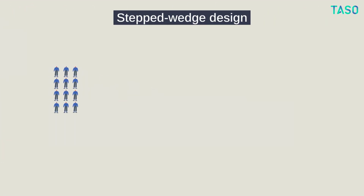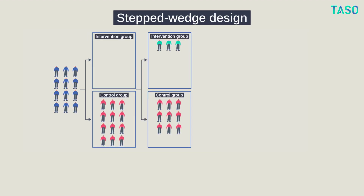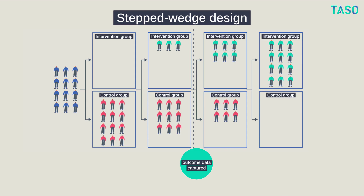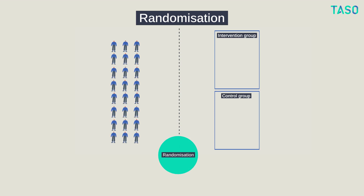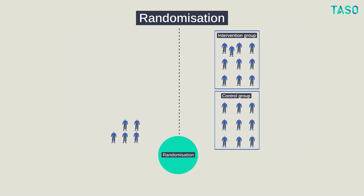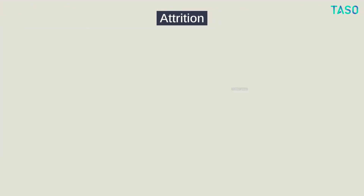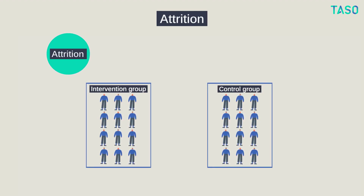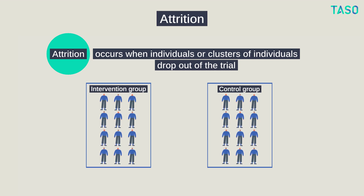Another way to address this ethical concern is to use a stepped wedge design, where trial participants are randomly assigned to start the intervention at staggered time points. Despite this ethical concern, the randomisation in an RCT can be a fair way to determine who takes part in an oversubscribed intervention. Any individuals who would not have been able to participate anyway can be recruited as a control group. These types of designs also address another common concern in RCTs — attrition — which is when participants drop out of the trial, posing challenges to its integrity. Making the offer to the control group attractive is one way to minimise attrition, with these types of RCT designs doing just that.